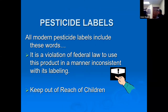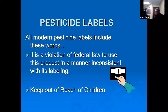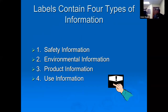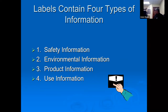Now let's look at what's actually on a pesticide label. All labels will have: 'It is a violation of federal law to use this product in a manner inconsistent with its labeling,' and 'Keep out of reach of children.' There are four common types of information: safety information such as reentry intervals and required PPE, environmental information, product information including formulation and active ingredients, and use directions — what it controls, how to apply it, and how much.